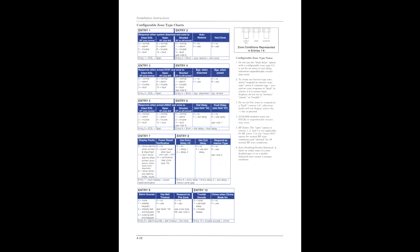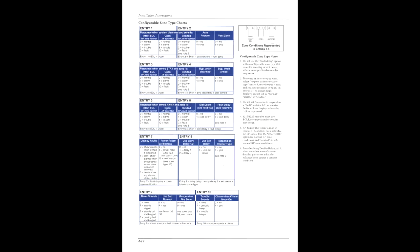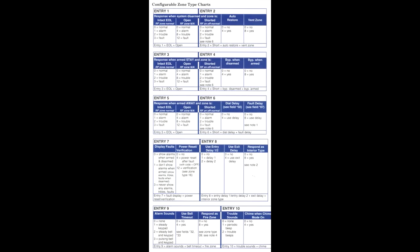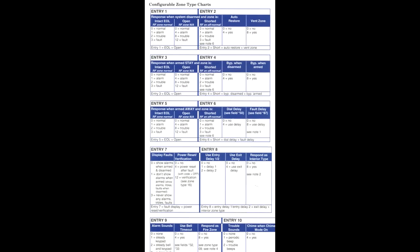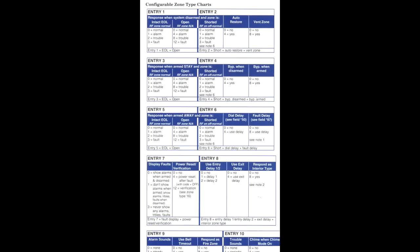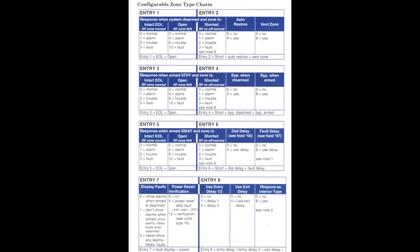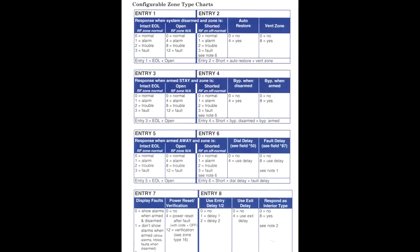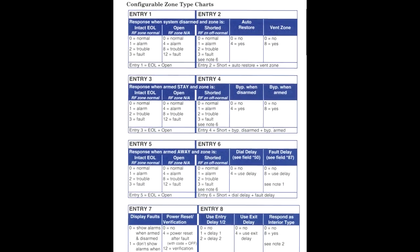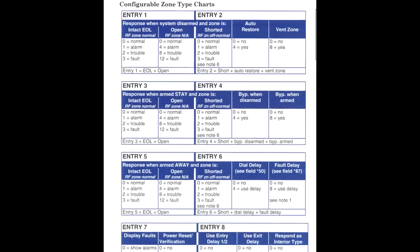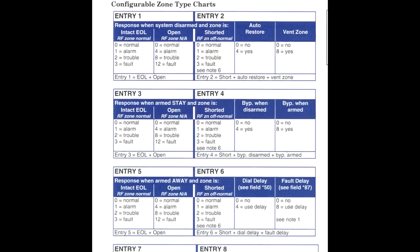Let's slip the page in the manual to 4-12. On this page you are going to see this spreadsheet entitled Configurable Zone Type Charts. There are 10 specific fields on this spreadsheet.